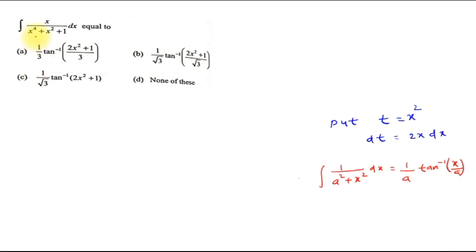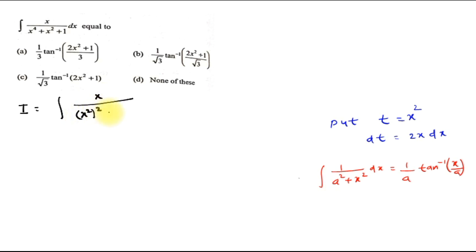Hello dear students, this is your question. Here we have to find the integration of the given function. We write I as the integration of x divided by x⁴ + x² + 1 dx, where we can write x⁴ as (x²)² so the denominator becomes (x²)² + x² + 1.